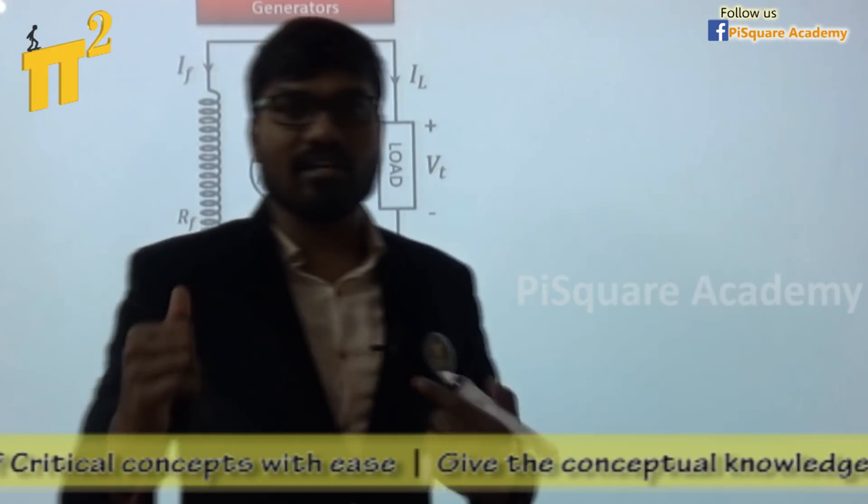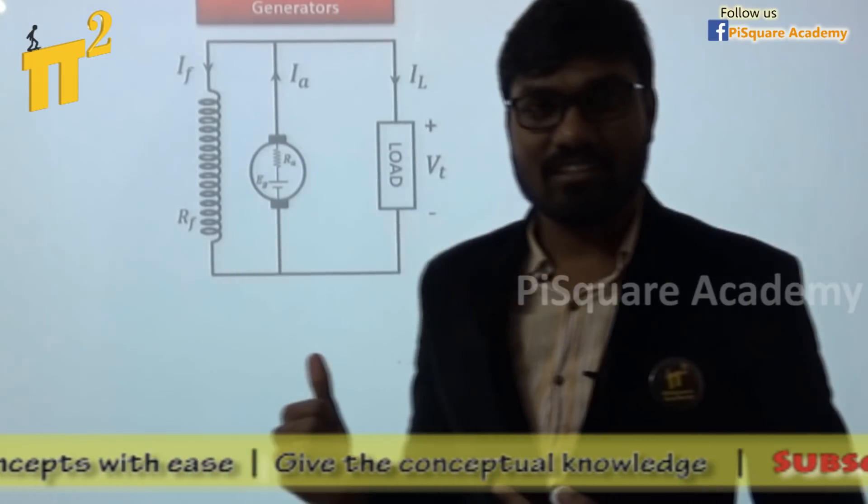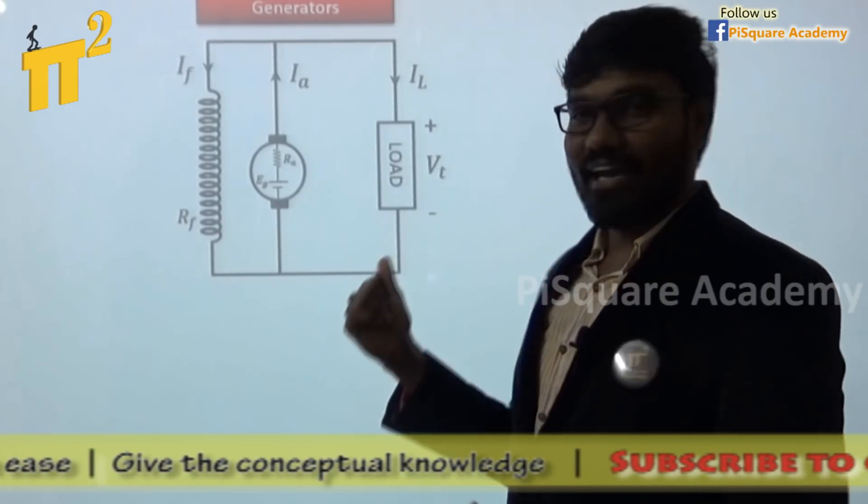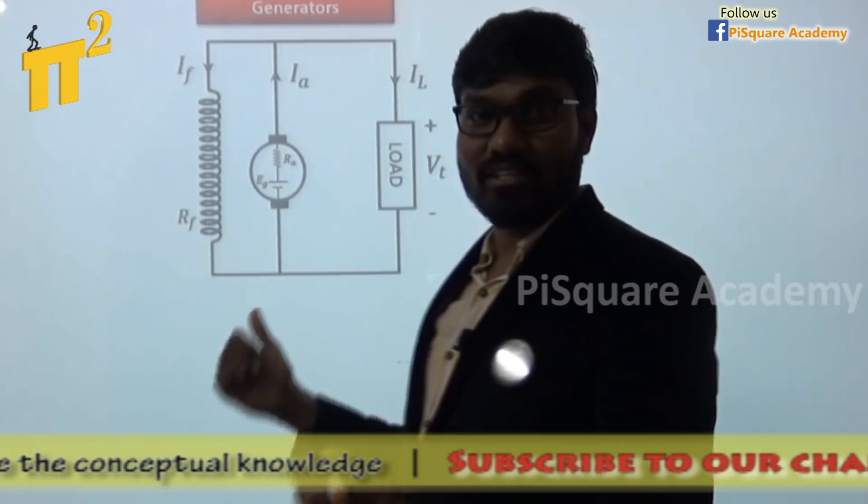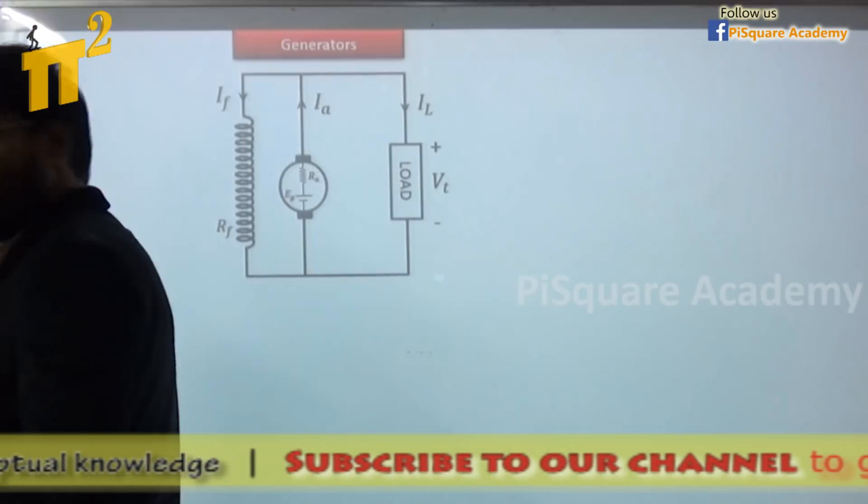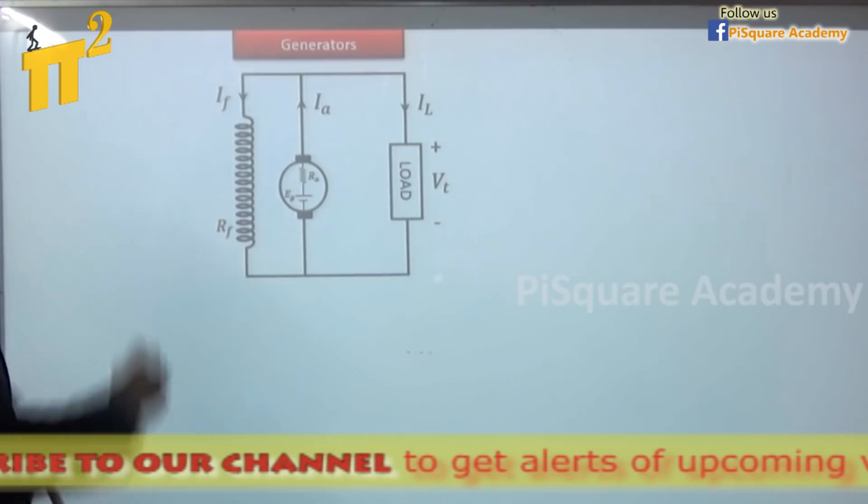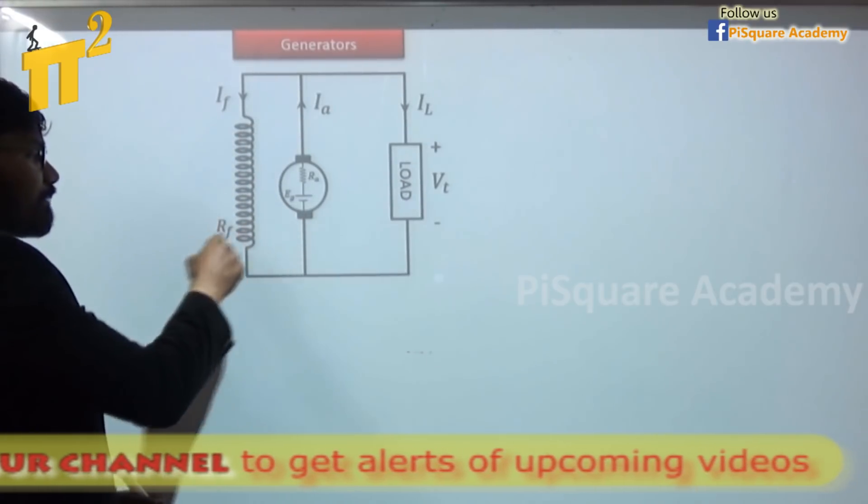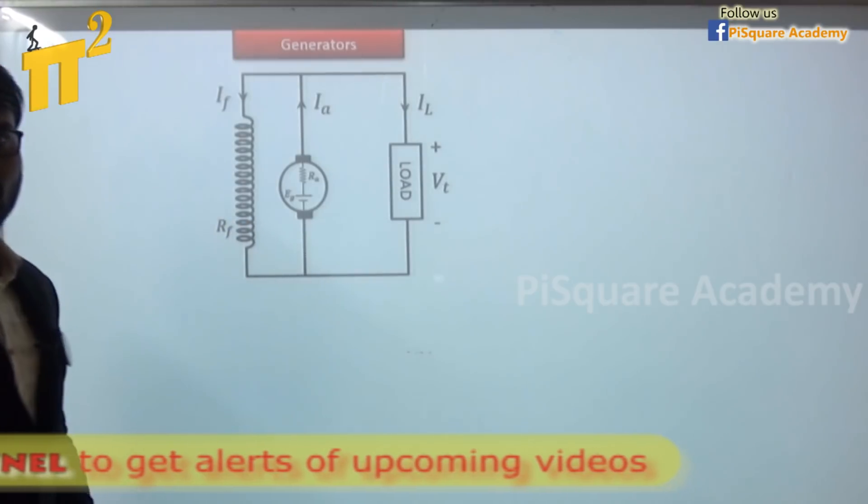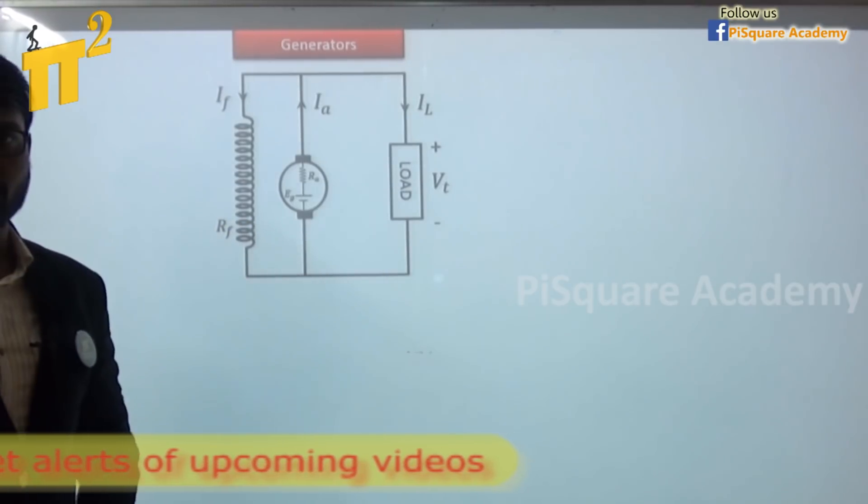So this kind of generator is called, yeah, guess now. Yes, self-excited DC generator. Because here armature itself is supplying the magnetic field. Armature itself is developing the magnetic field also. Hence the name self-excited DC generator.